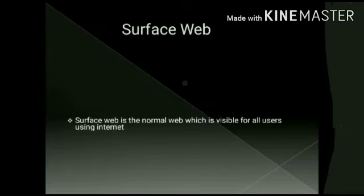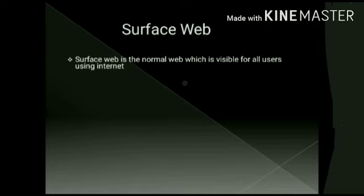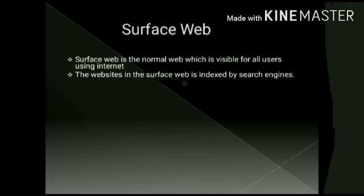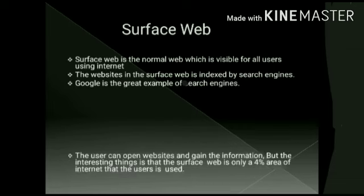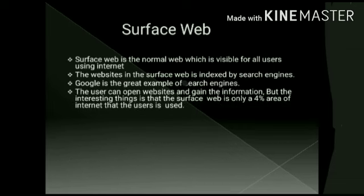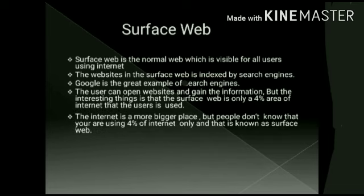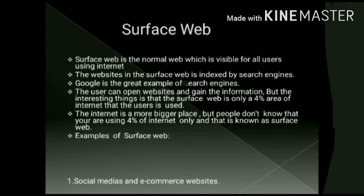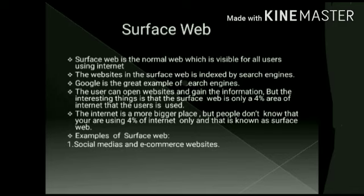First of all, Surface Web. This Surface Web is a normal web — users are visible inside the internet and you can access it. You can use this website and search using Google. It occupies only about 4% of the total internet. Examples include Facebook, Twitter, Instagram, and many social media apps.